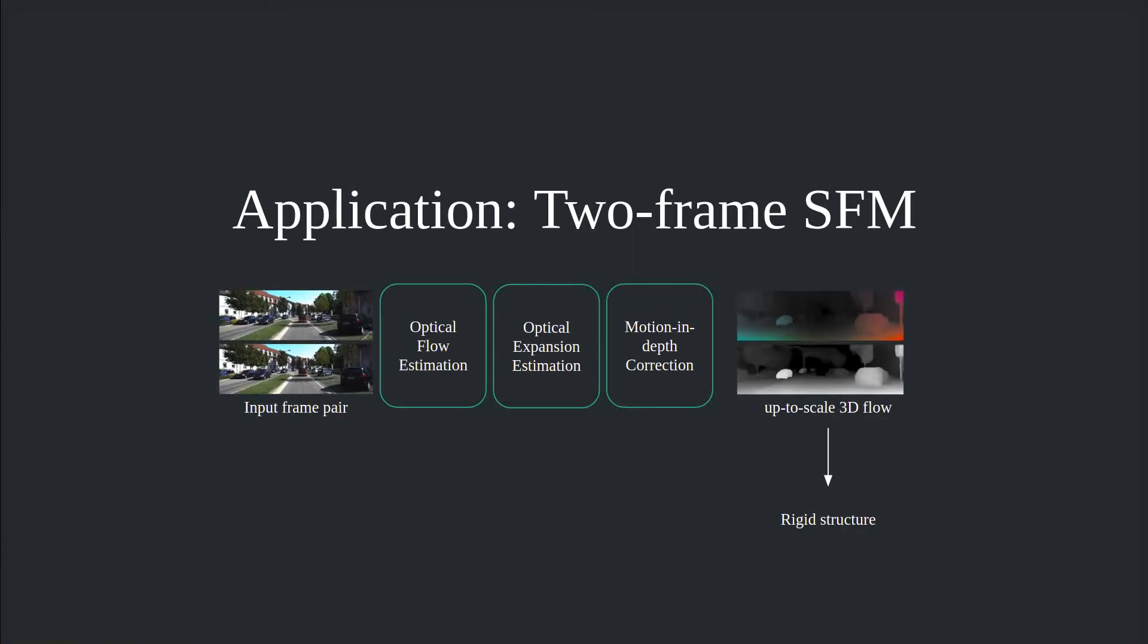Finally, we explore two-frame structure from motion with predicted up-to-scale scene flow. We jointly estimate the camera motion and scene geometry.